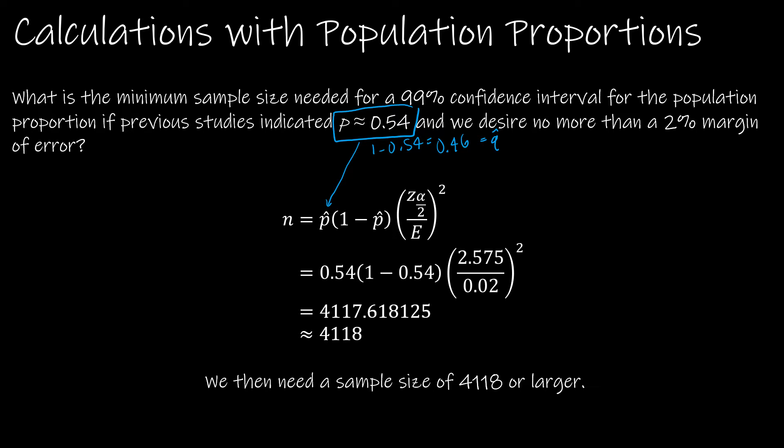The 2% is our e, so 2% is 0.02. The big question becomes where did 2.575 come from. That came from the critical value. Because we're looking at a 99% confidence interval, that means 99% is here, 0.005 is here and 0.005 is here, so this value came from norm.s.inverse of 0.995.